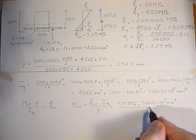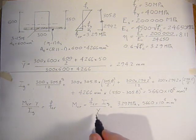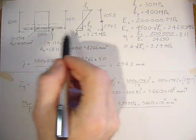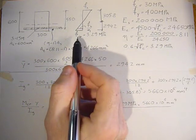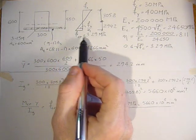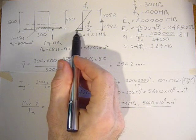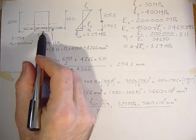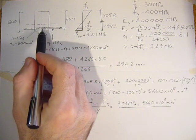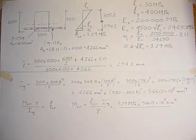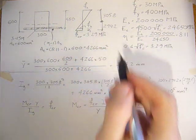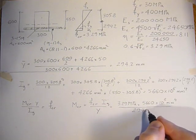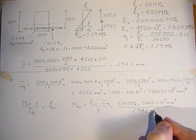Y is the distance from the neutral axis to where the stress is located. We're taking stresses at the 3.29 MPa location. That's this distance here, which is 294.2 millimeters.